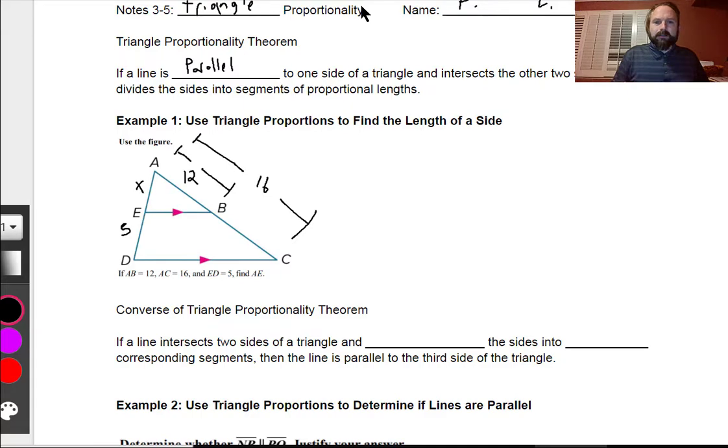We can take this and say, hey, this is going to be AB over AC, so small right to the triangle over AC, will equal, let's say, AE over AD. So if we wrote that out, this would actually be 12 over 16 is equal to AE, X, and from A to D, that would be X plus 5.